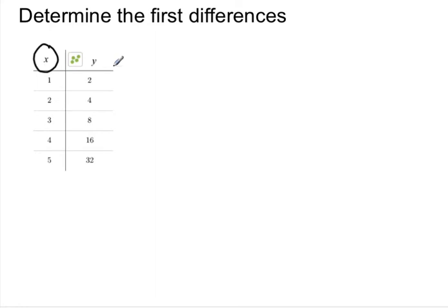The first difference is a calculation on the y-coordinates. What we do is we add an extra column, and we'll title it the first differences.